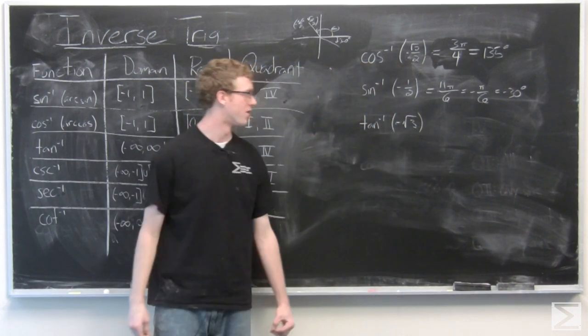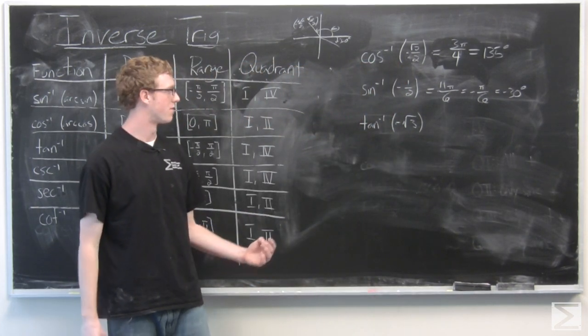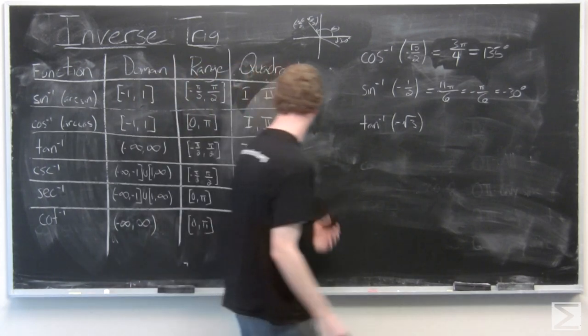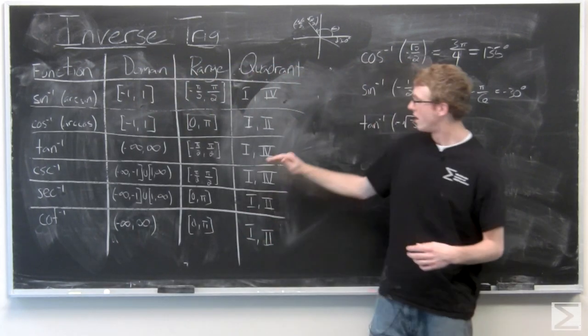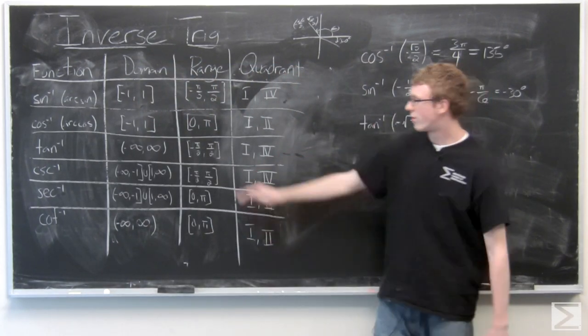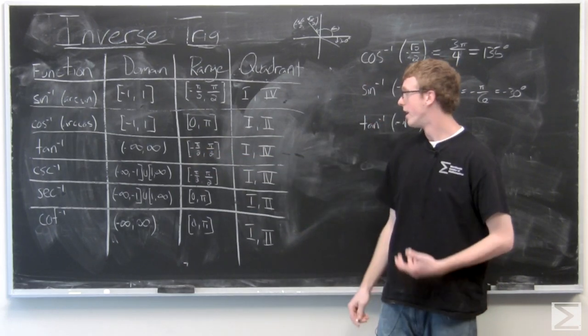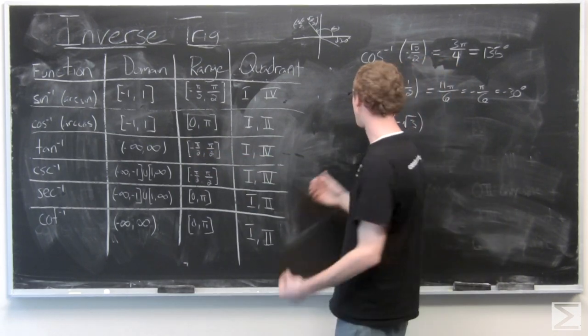Now we can take a look at inverse tangent of negative √3. So we see that inverse tangent lives in quadrant 1 and 4. The range is negative π/2 to π/2.